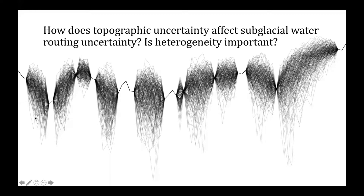Imagine we have some set of possible topographic permutations given some measurement constraints. You can see that the uncertainties are low in some places where there would be a measurement, and the uncertainty increases moving away from a measurement. In most ice sheet hydrological analyses, we use topography that looks something like the average of this distribution. But this topography is unrealistically smooth, so it might alter the behavior of our system. And if we only use the average of all the possible solutions, we're not able to quantify the uncertainty of that system with respect to topographic uncertainty.